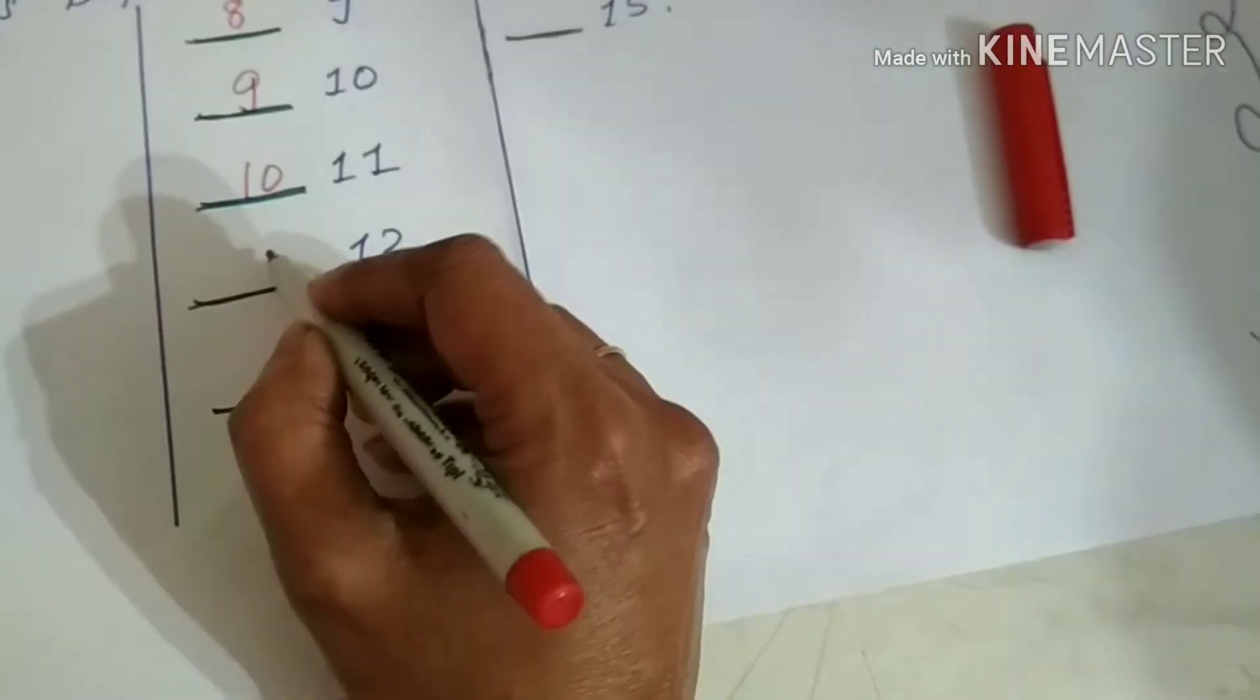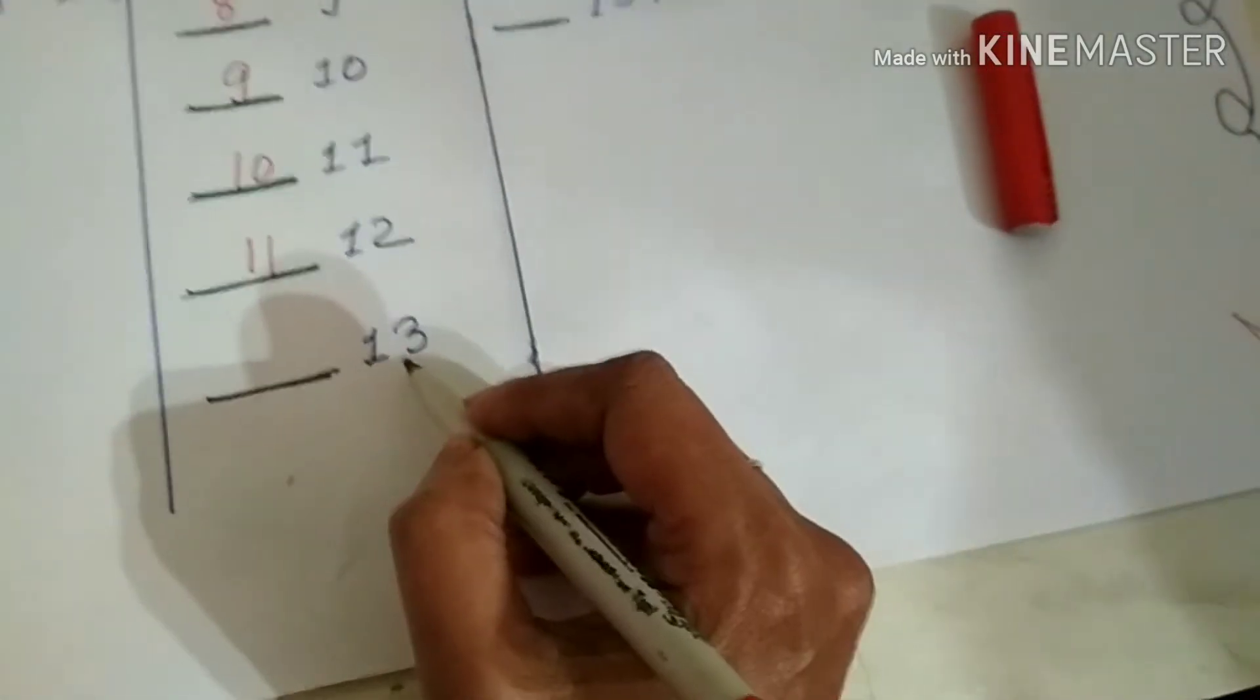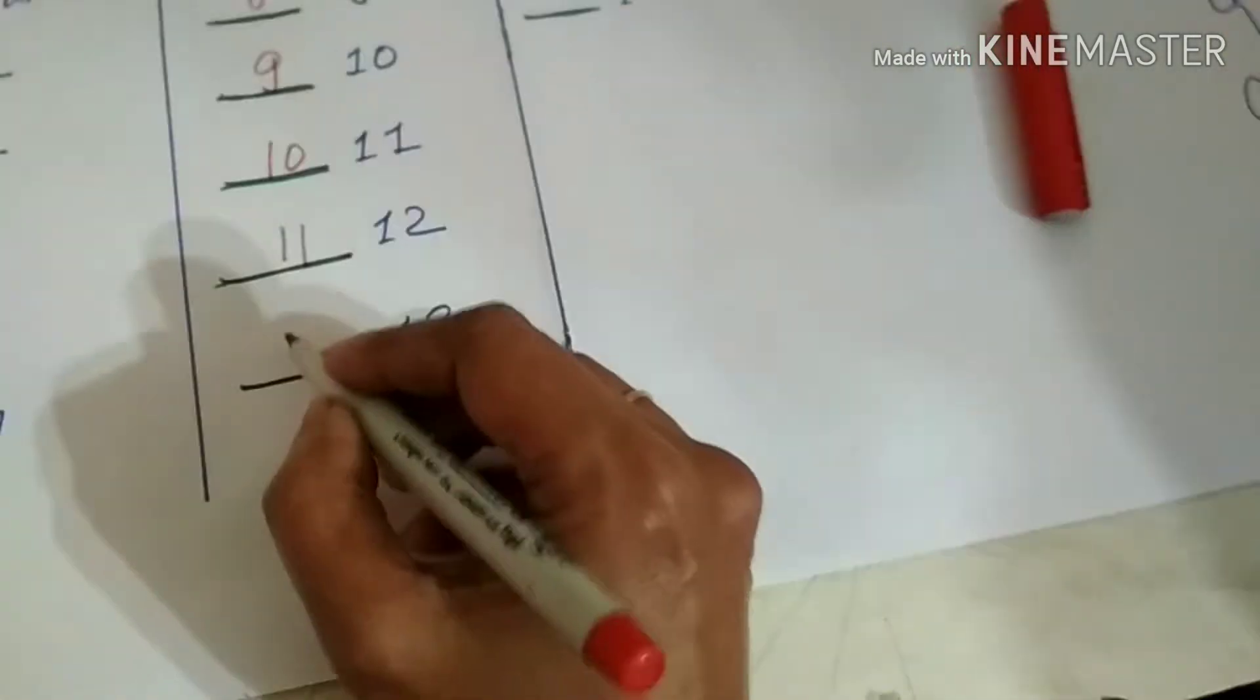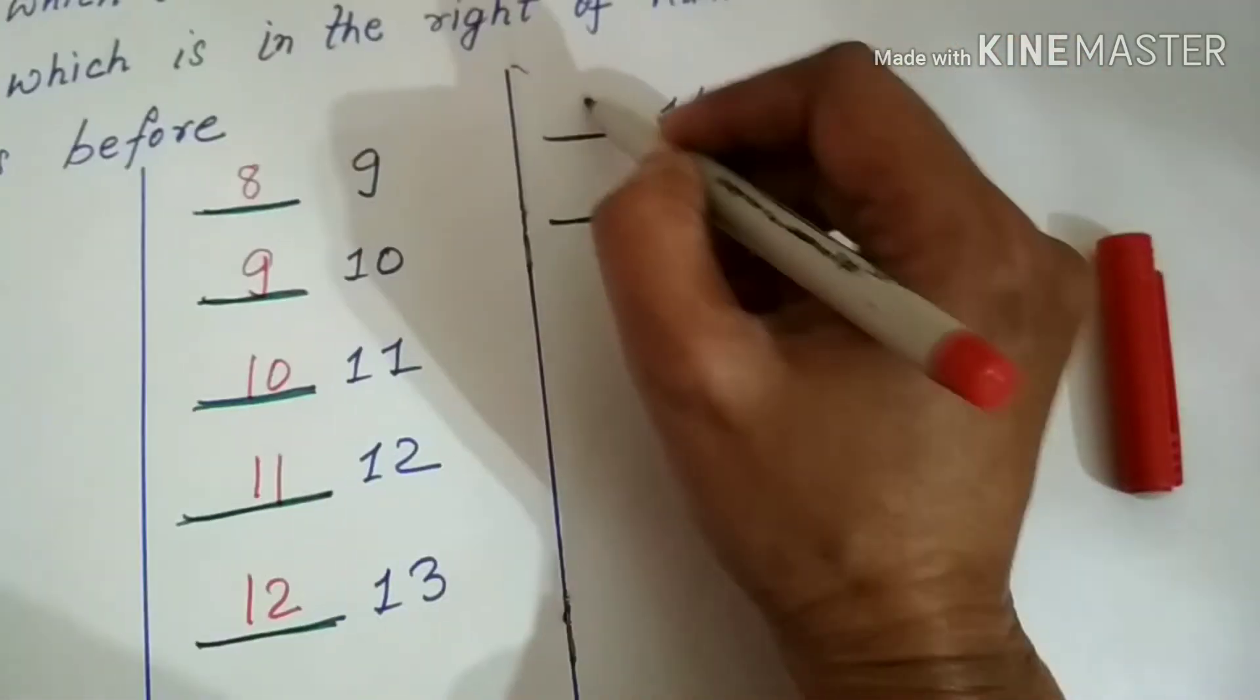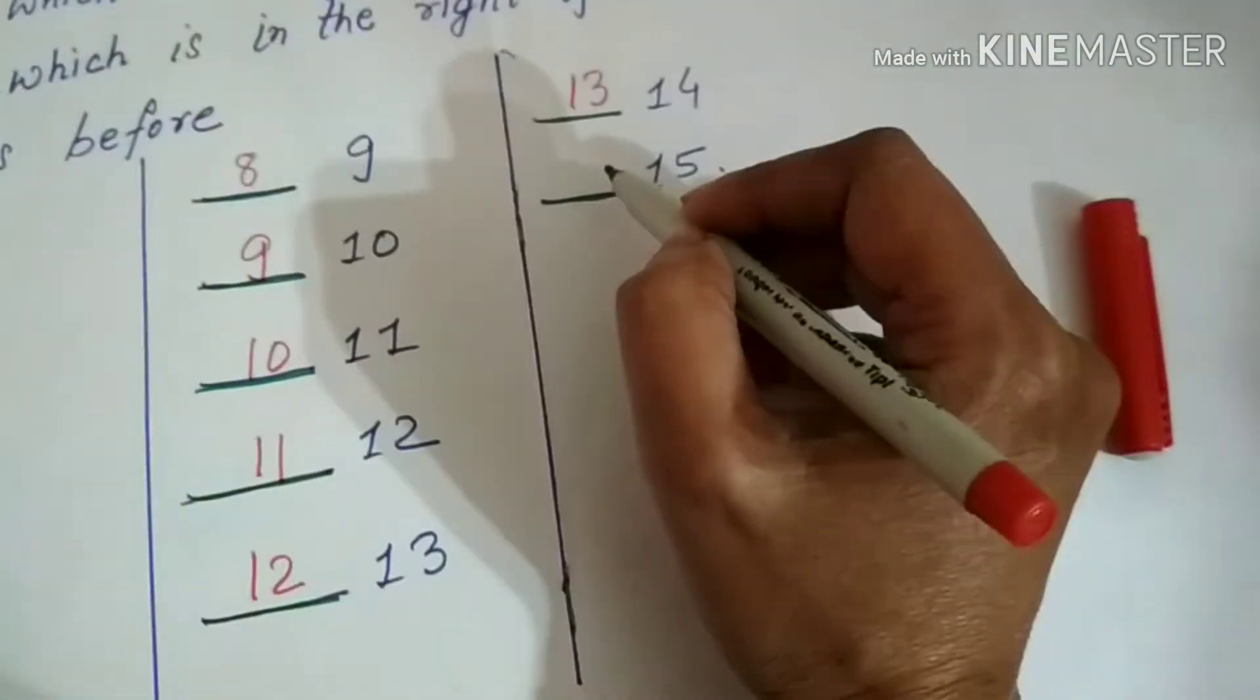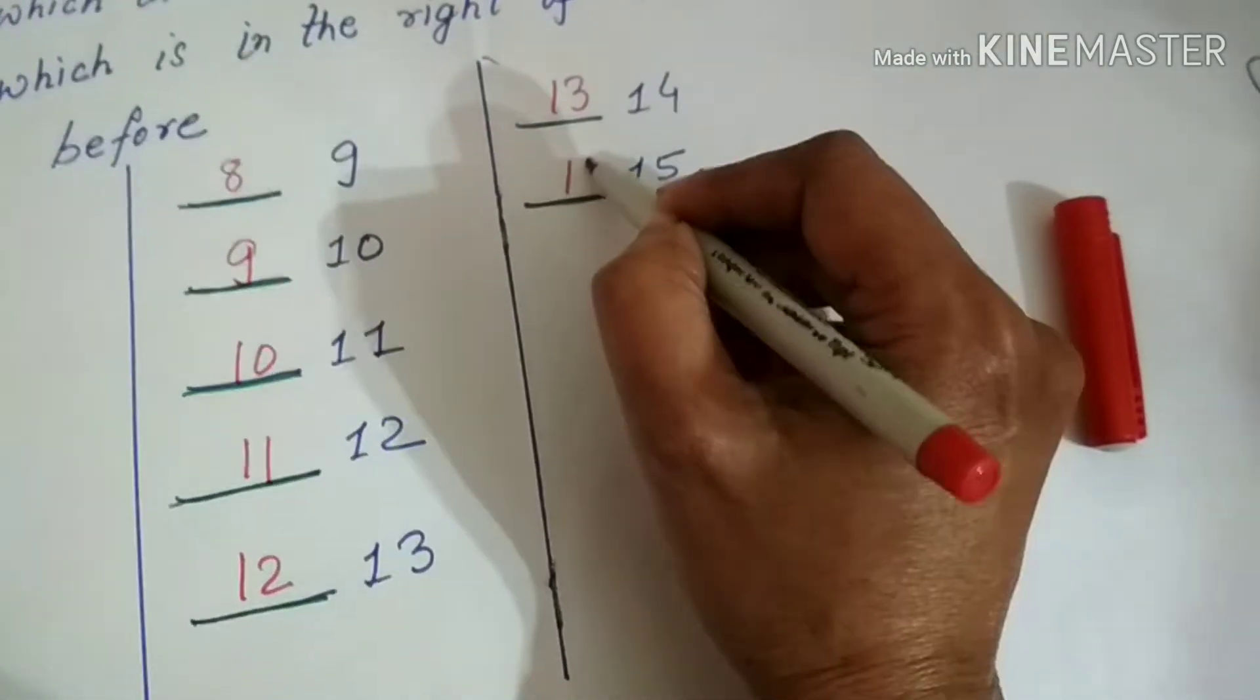What is before 12? 11. What is before 13? 12. What is before 14? 13. What is before 15? 14.